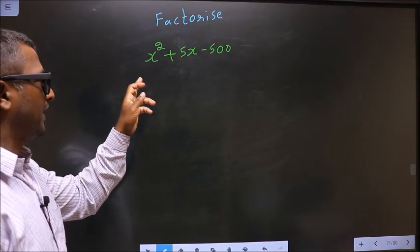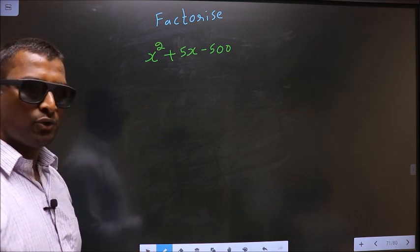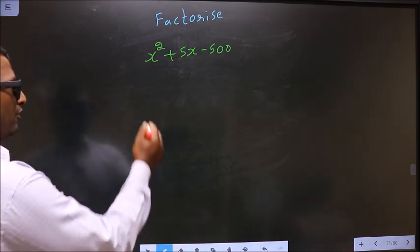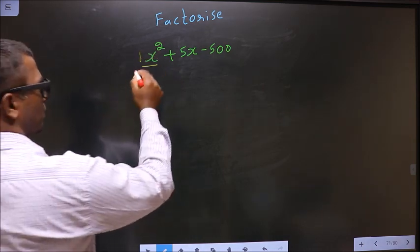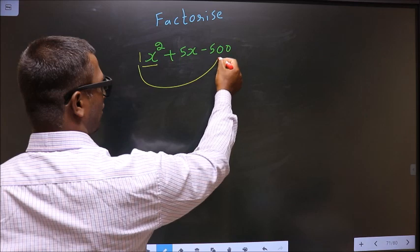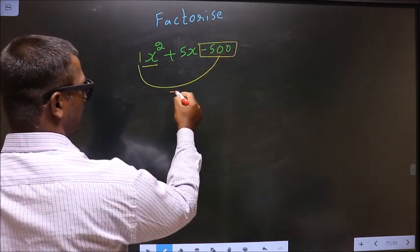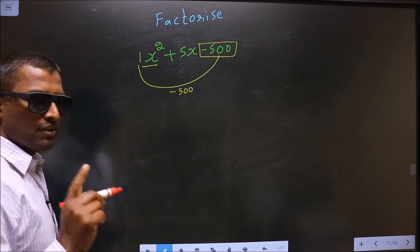Factorize x squared plus 5x minus 500. To factorize, step 1: the coefficient of x squared, which is 1 here, should be multiplied to the constant, that is minus 500. So 1 into minus 500 is minus 500. This is your step 1.